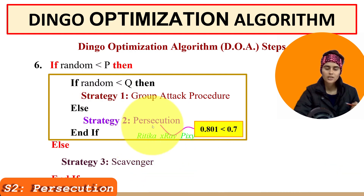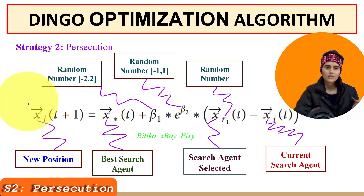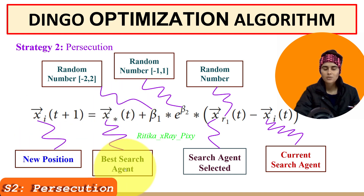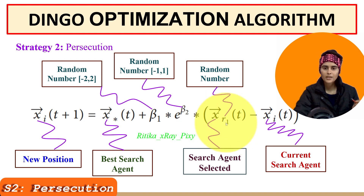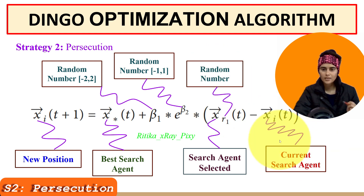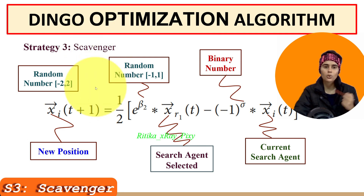If the group attack condition is not true, we apply strategy two — persecution (individual hunt). The new position is calculated using the equation: x_i(t+1) involves x* (best position), beta_1 (random in [−2, 2]), beta_2 (random in [−1, 1]), and x (a selected search agent), with r1 as any random number and the current agent. This equation updates the position for each individual during individual hunting.